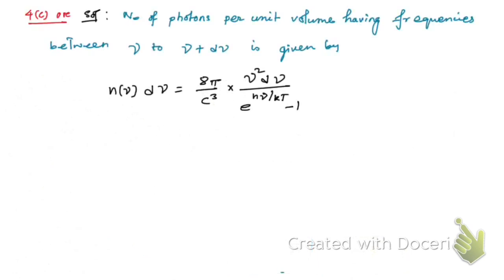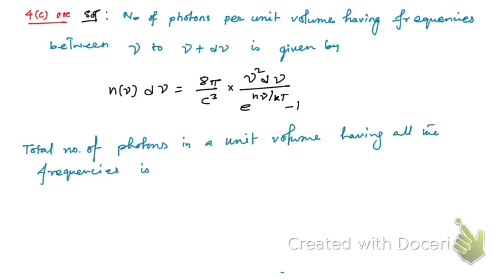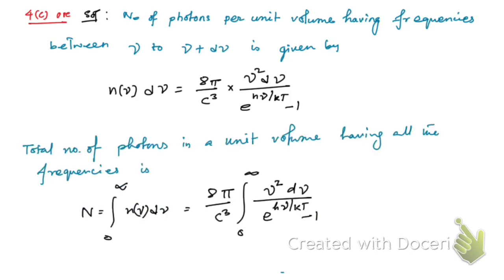The number of photons per unit volume having frequencies between ν and ν + dν is given by a standard relation. To find the total number of photons in a unit volume having all frequencies, we integrate that expression from zero to infinity.